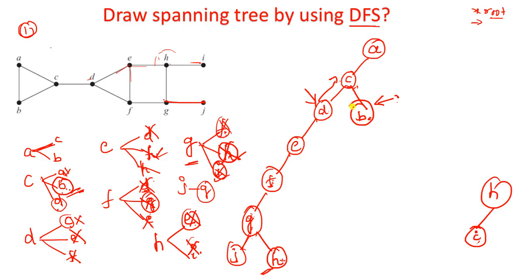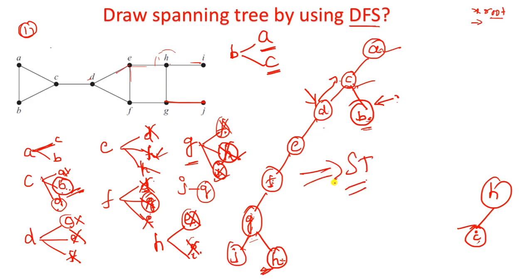Check whether all vertices are visited: A, B, C, D, E, F, G, H, I are all visited. In our spanning tree, all the vertices are present. Now check whether this spanning tree is correct. How many vertices are there? N equals 10 vertices. So in the spanning tree, how many edges should be there? N minus 1, that is 9 edges should be there.